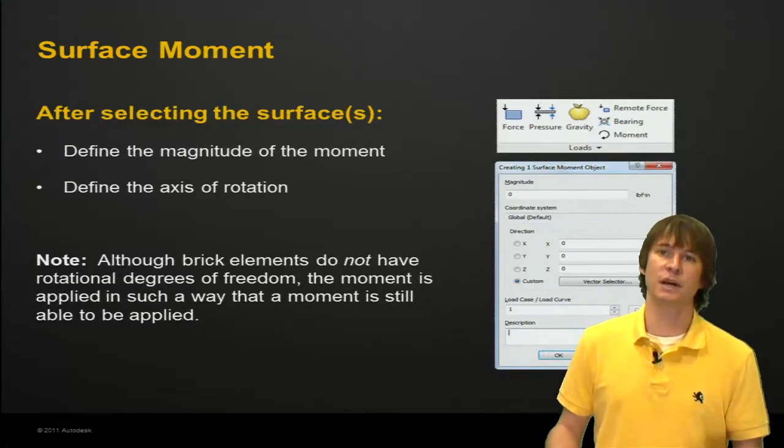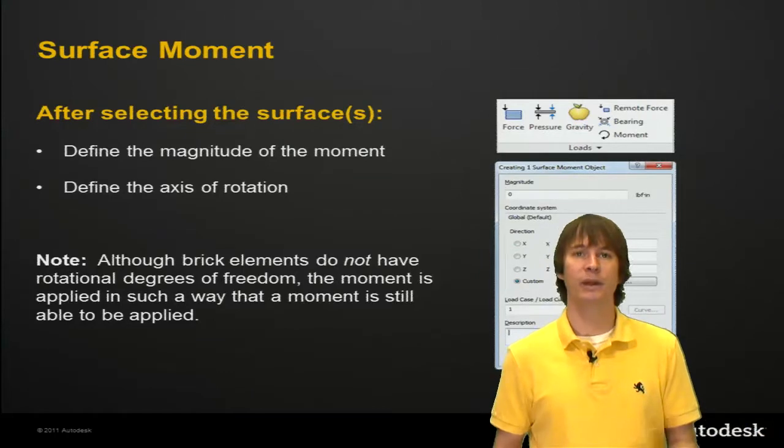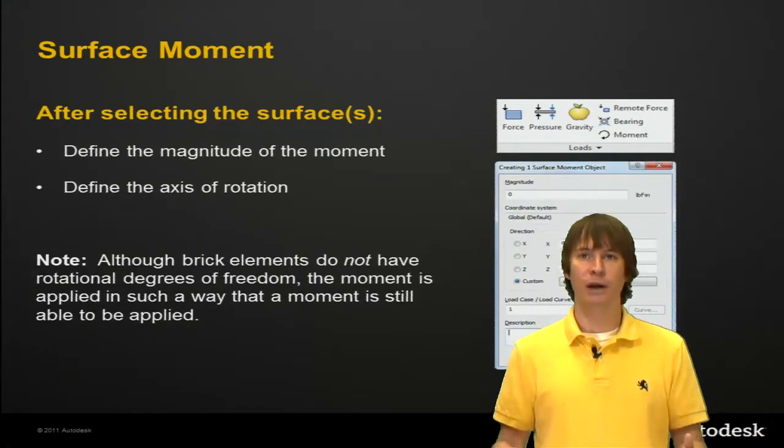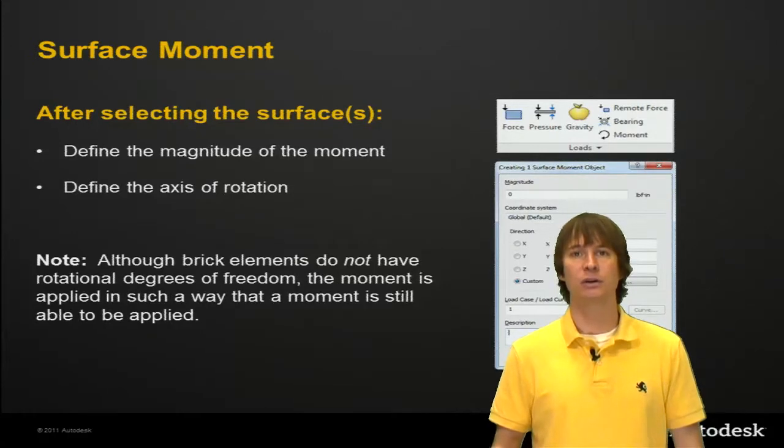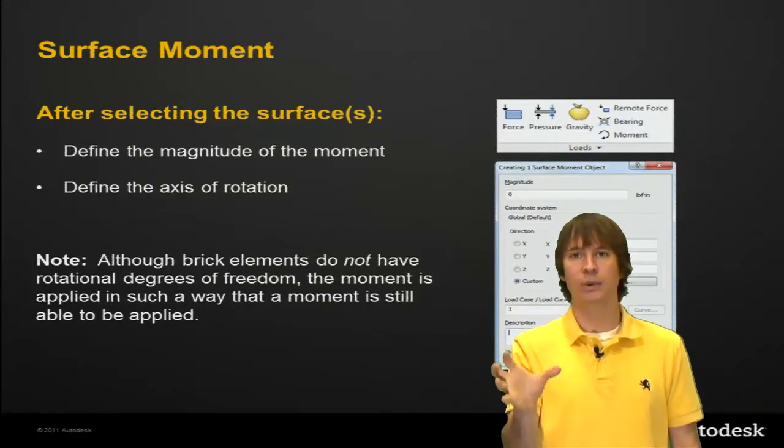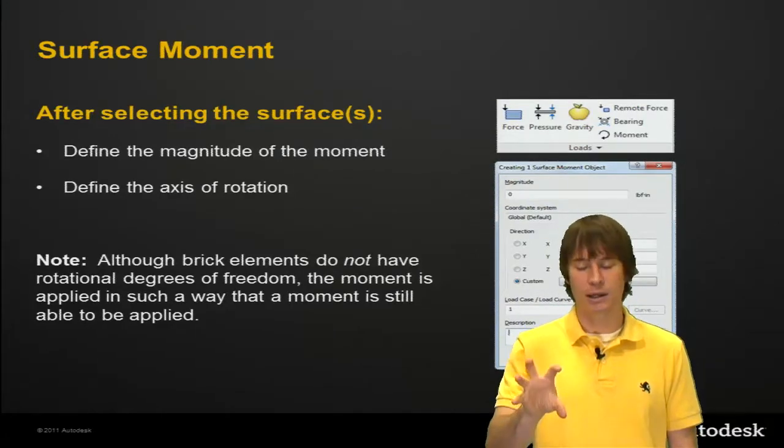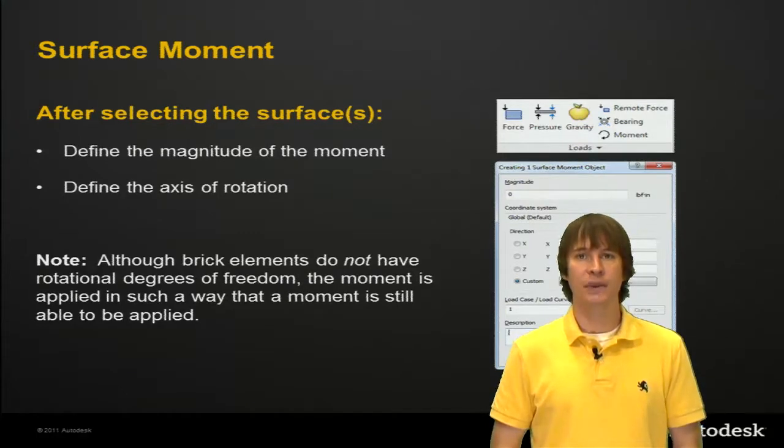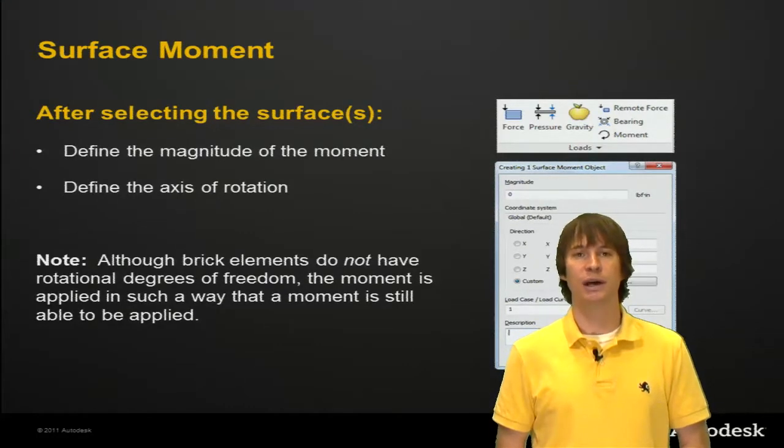So usually this doesn't work if you just put a moment on them—they can't really rotate. But the way this is applied, it's sort of like breaking our moment down into a bunch of little forces acting around the model so that we can torque it. So we're translating it a little bit at each place or each node so that we can get an accurate moment applied. Let's go into this in a little more detail in the software.